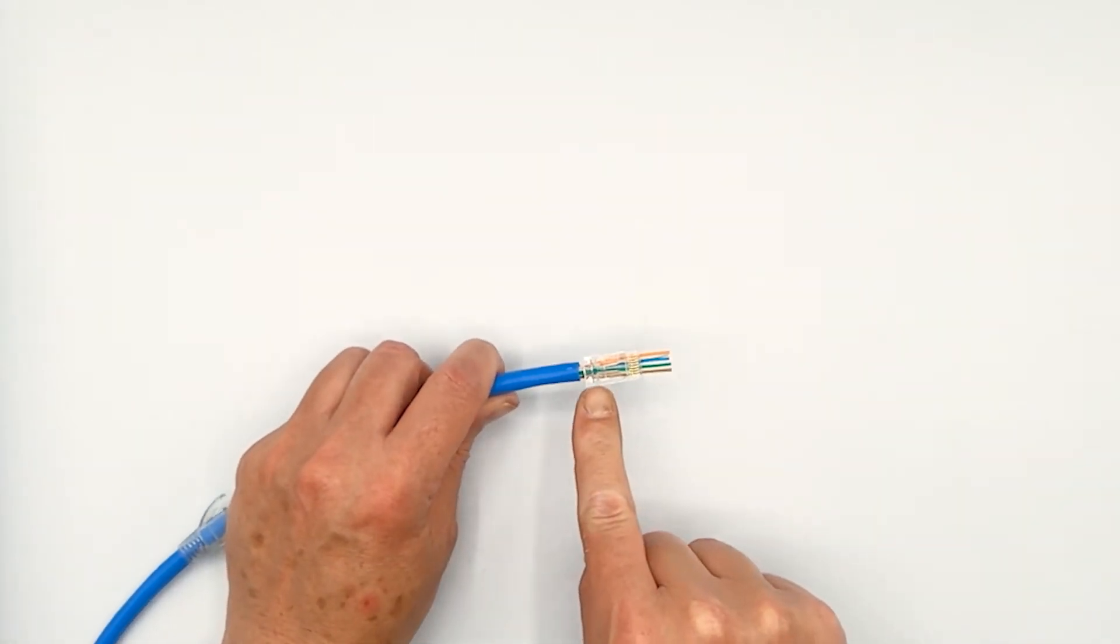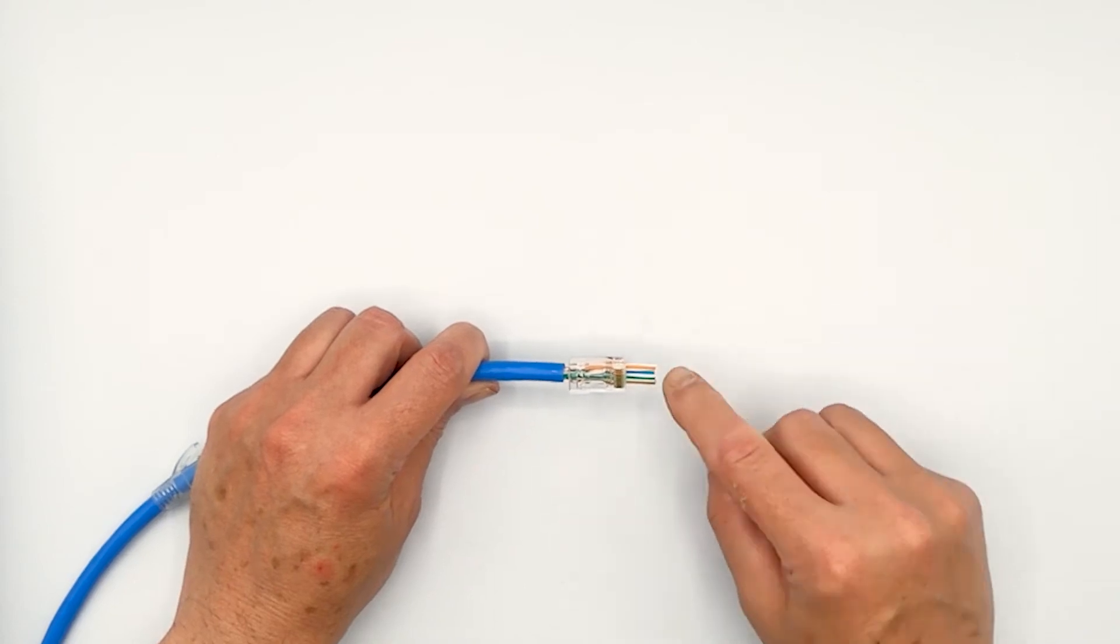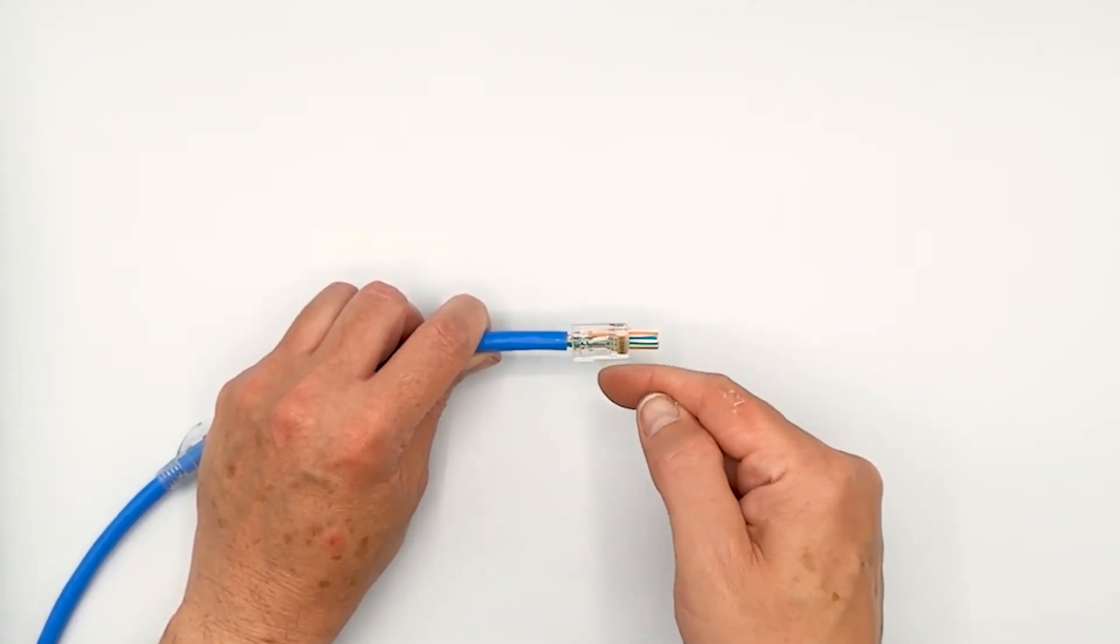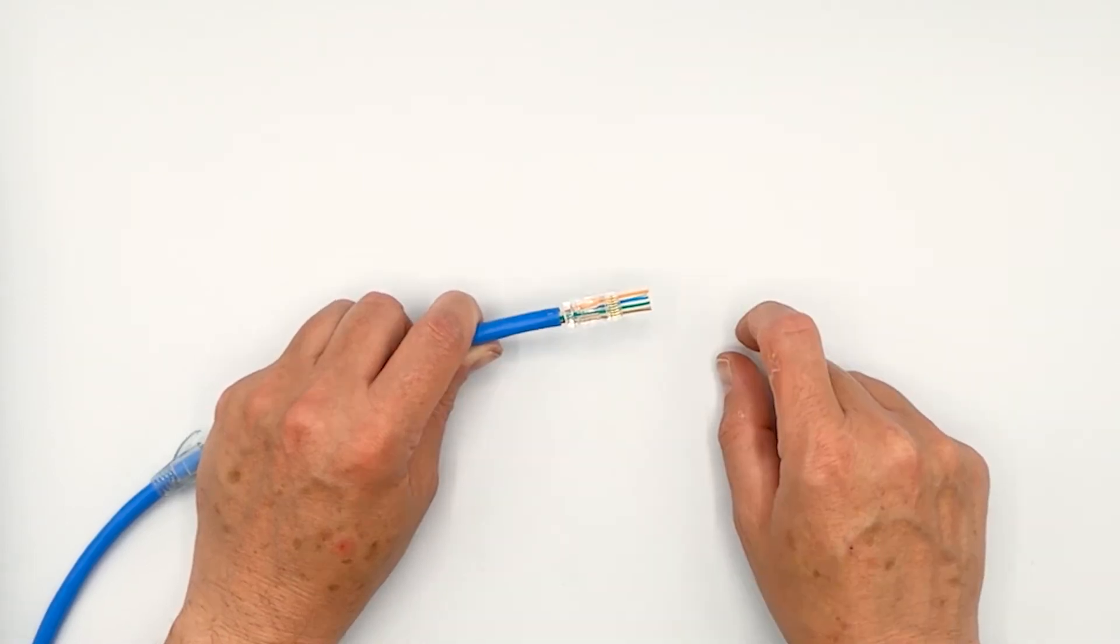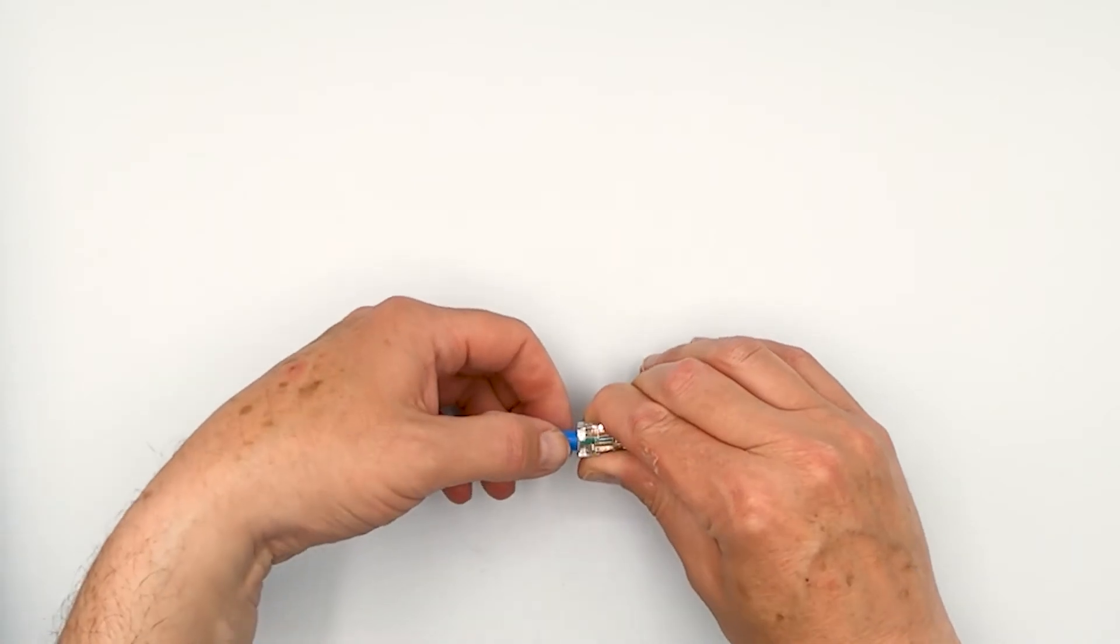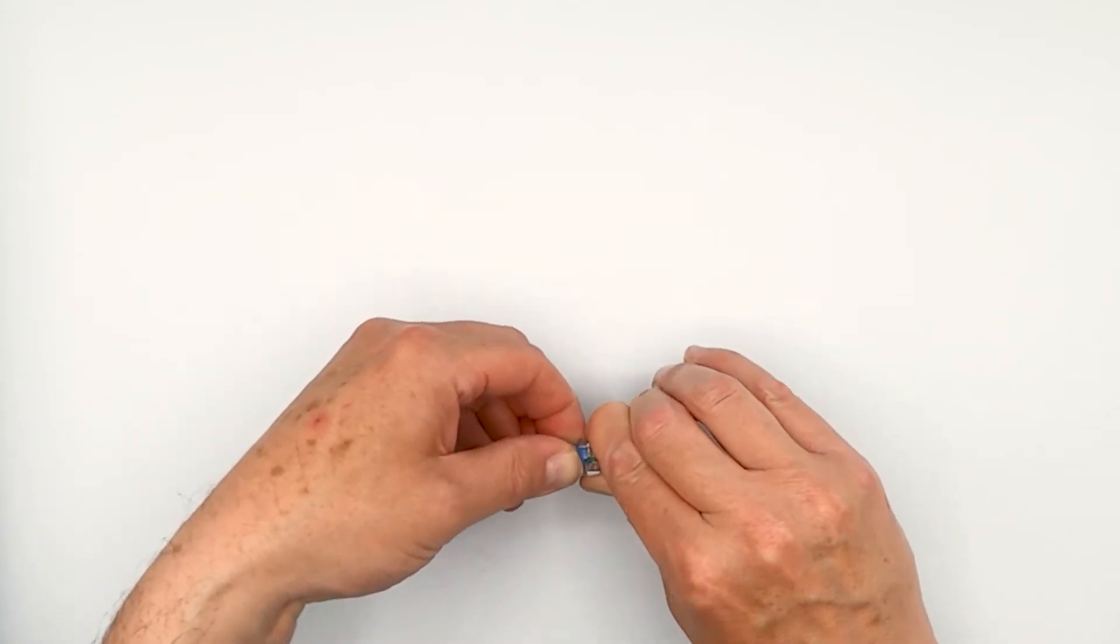All right, so don't quite seat your plug on fully yet. What you're going to want to do is reconfirm that these conductors did not cross over while putting on the plug. And they're still correct. So now you can continue seating the cable jacket. And you may need to pinch it a little bit to get it to go in there.